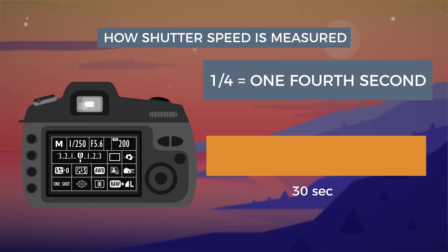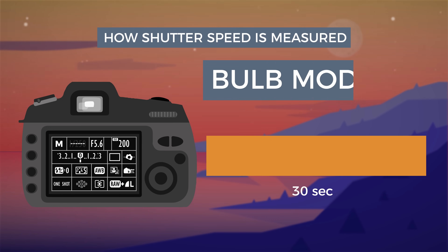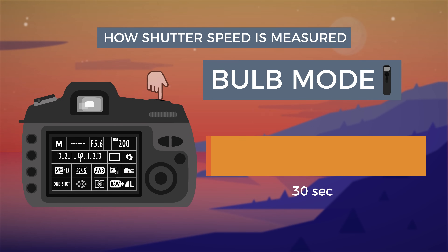Longer shutter speeds can be achieved using a function known as bulb mode, where the shutter speed is determined by the length of time the shutter button is activated, either manually or through a remote trigger.